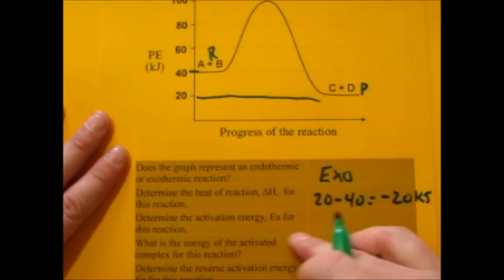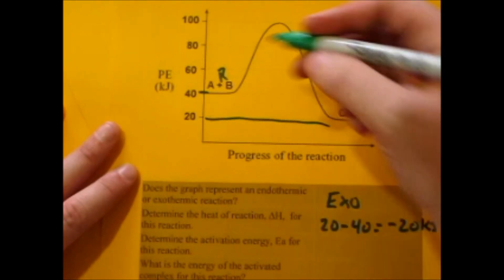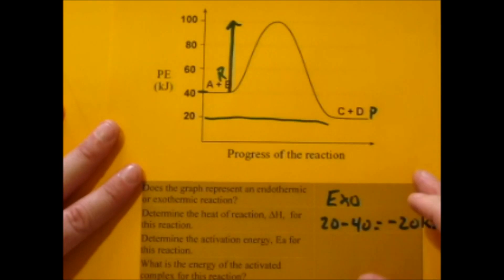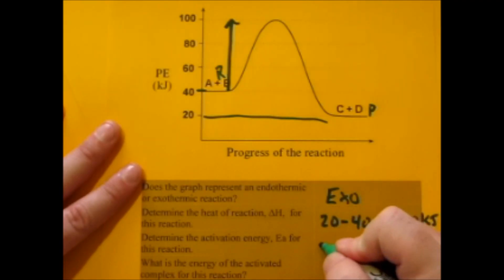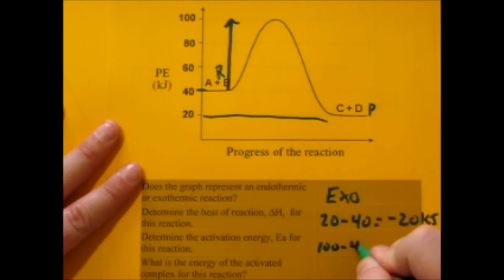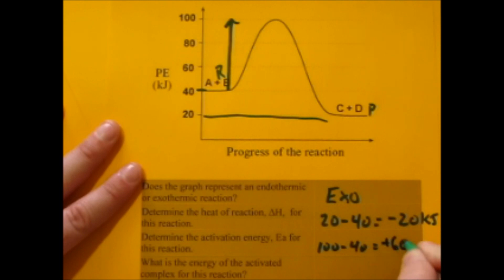The activation energy for the reaction: you start at the reactants and find the energy to get up that hill. The hill at the top is 100 and we start at 40, so that's positive 60 kilojoules.